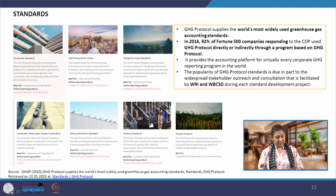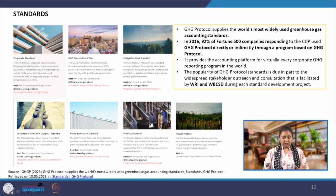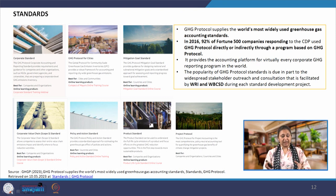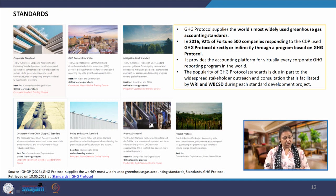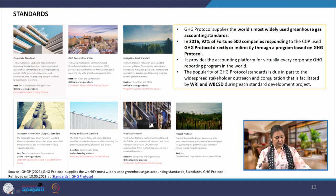Coming to GHG accounting standards within the GHG protocol — within GHG protocol we have seven standards for different purposes, different user groups, and different entities. We have a corporate standard which was also the first one to be established — it enables corporate accounting and reporting for corporates.